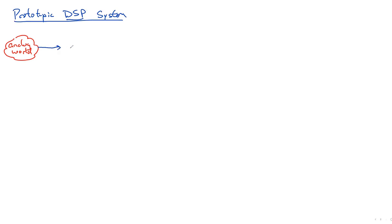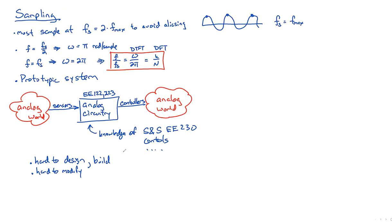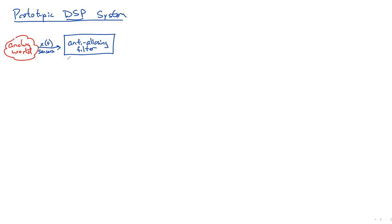We still had the analog world, but now we measure a potential, say a voltage potential through sensors, and we put it through an anti-aliasing filter. Our goal with the anti-aliasing filter is to prevent the aliasing that will occur for any frequencies greater than F_S over 2. So it's a low-pass filter which passes only frequencies less than F_S over 2.